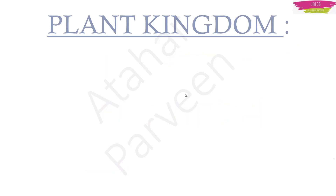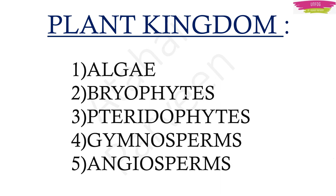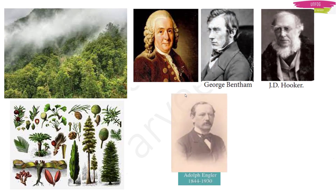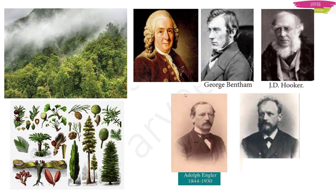The plant kingdom can be divided into five groups: algae, bryophytes, pteridophytes, gymnosperms, and angiosperms. There are so many plants around us, and to understand them clearly we needed a classification system. Many great scientists gave different systems of classification. Let's take a look at them.